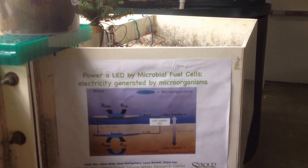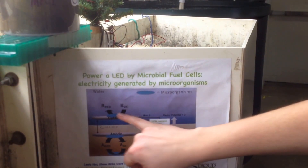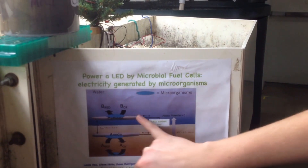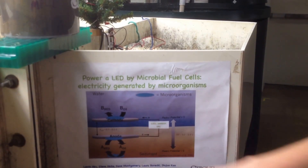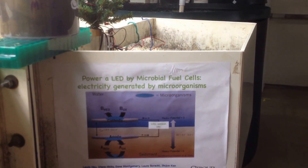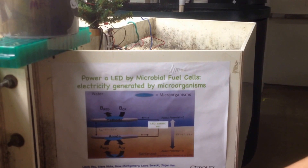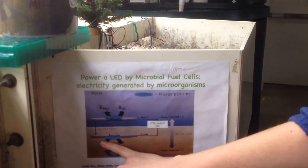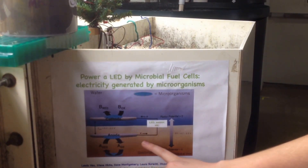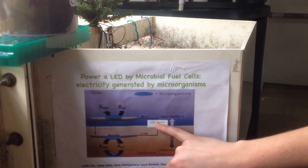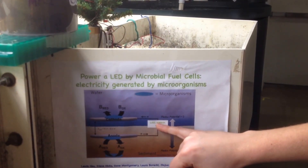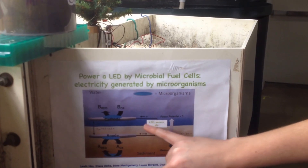When we attach a cathode, it creates a difference in electric potential. We can harness that flow of electrons and use it to power an LED light, a sensor, or other equipment.